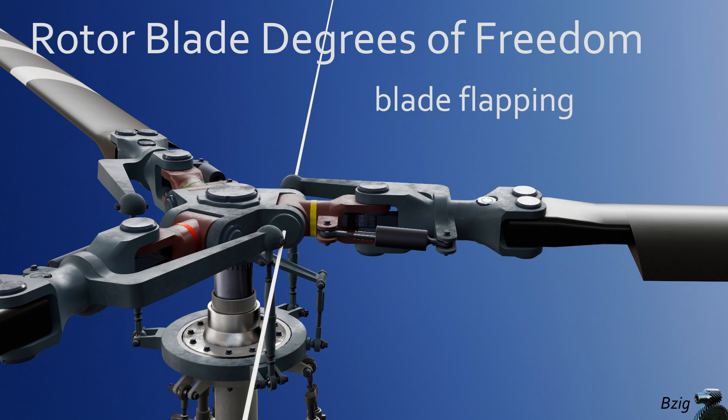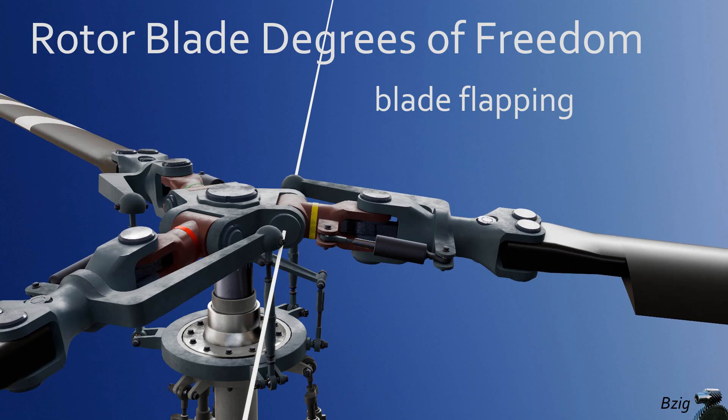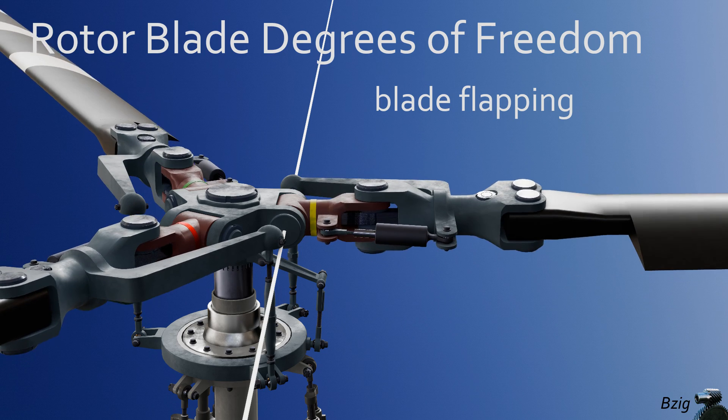Blade flapping is rotation of the blade about the rotor head's flapping axis, and the component highlighted in red now is the rotor head's flapping hinge.